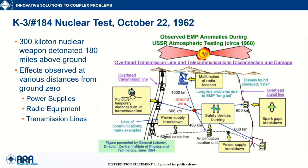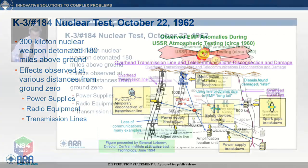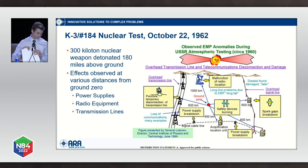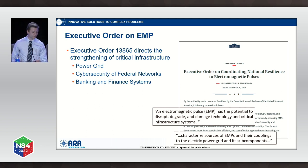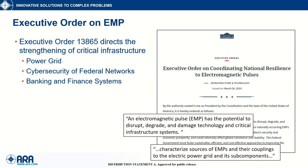While America was doing this kind of testing, other countries were doing similar testing. The K3-184 nuclear test was done by the Russians the same year as the Starfish Prime test, and similar effects were seen. There were reports of power supplies for radio equipment burning up, making the radio equipment useless. Anything in the area connected to a long conductor was pretty much blown out.